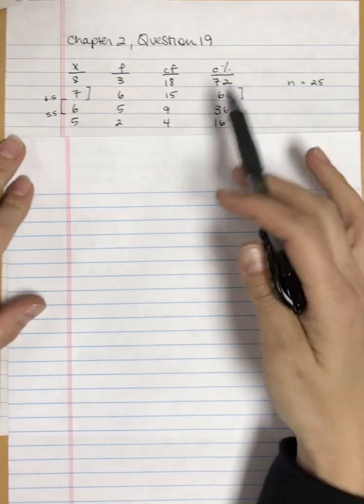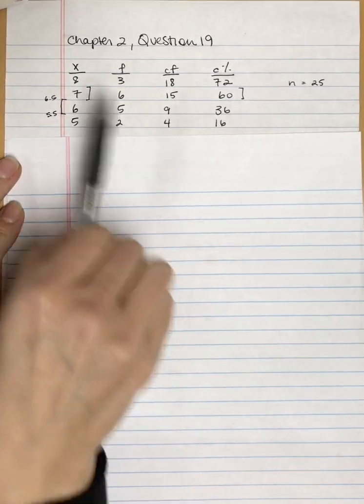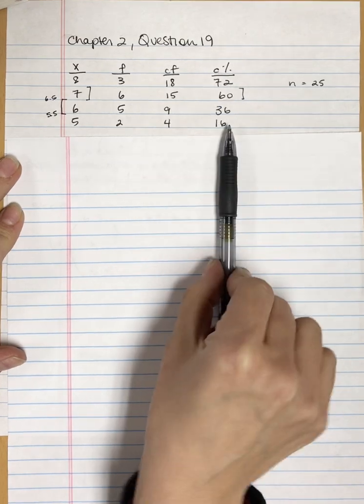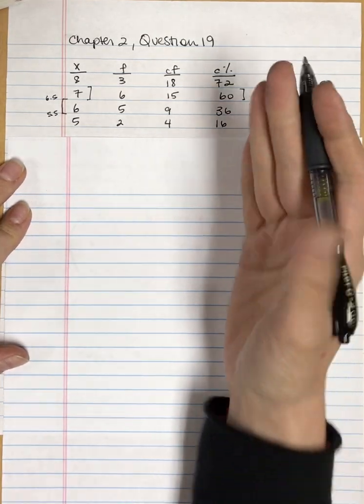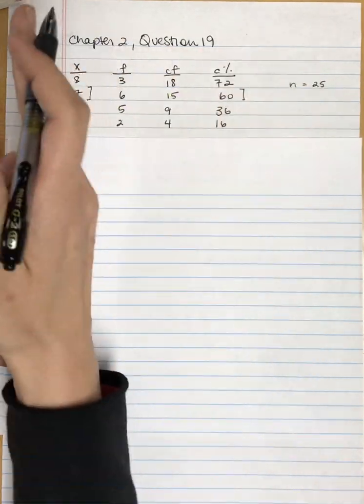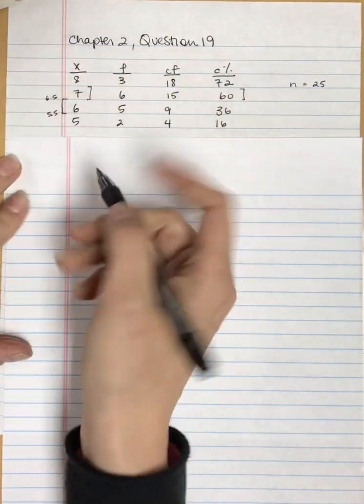For A and B of question 19, we were given an X score and had to find the percentile. For C and D, we're going to go in the opposite direction. For a given percentile, what is the corresponding X score?